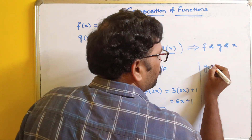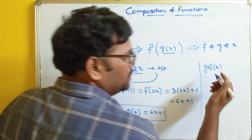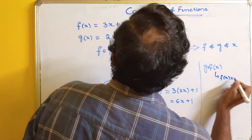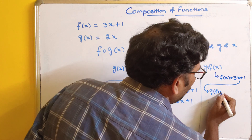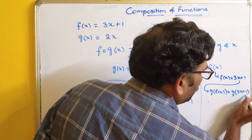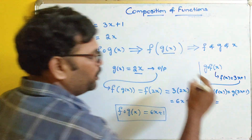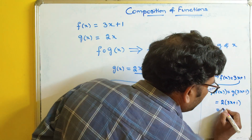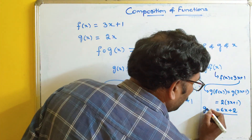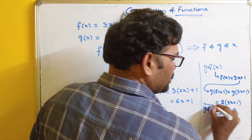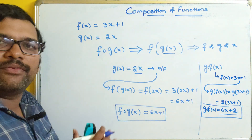Similarly we can also find g of f of x. So first we have to solve f of x and then give it as input for g of x. So f of x is 3x plus 1, and that should be given as input for g. So g of f of x becomes g of 3x plus 1. Wherever x is in g, we substitute 3x plus 1. So g of x is 2x, so 2 into 3x plus 1 which becomes 6x plus 2. So g of f of x is 6x plus 2.